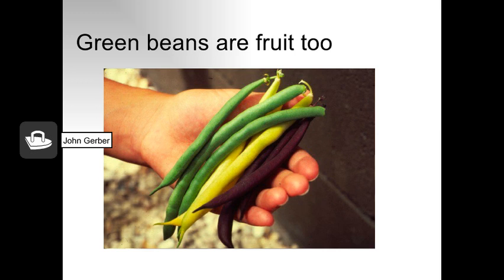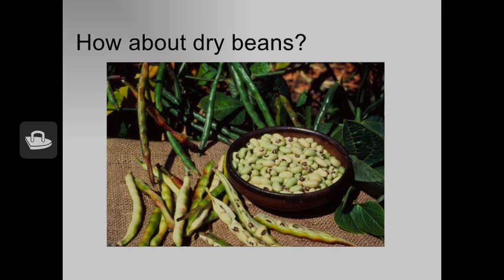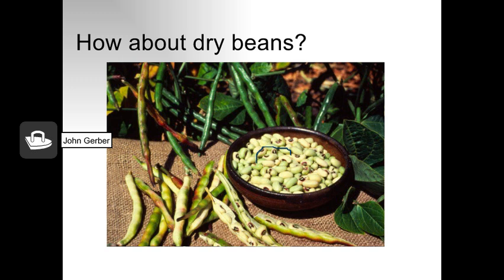This can be confusing. We think about green beans as vegetables because that's how we eat them, but they have seeds inside, so botanically they're a fruit — maybe a test question too. In dry beans, the seeds are harvested and the pods are thrown away, but the pods are actually the fruit that contain the seeds.